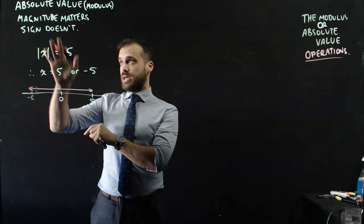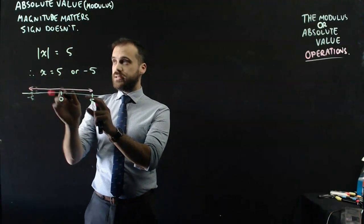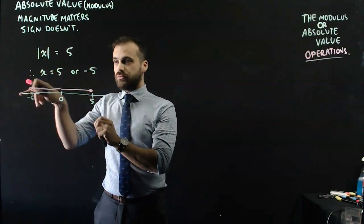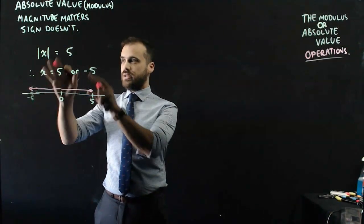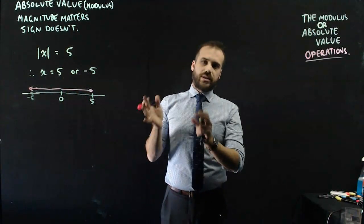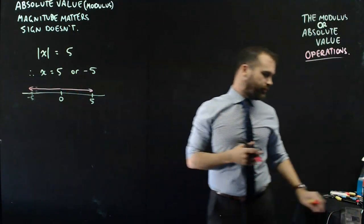It's probably useful to think about this in terms of a number line. You can see in both instances the distance from 0 is the same — from 0 to 5 is the same as from 0 to negative 5. That's what we mean when we say magnitude matters but sign doesn't. I don't care what direction it's going in; that's how we deal with absolute value.